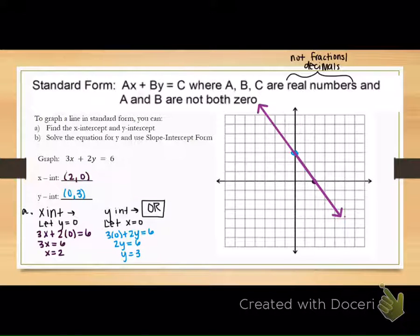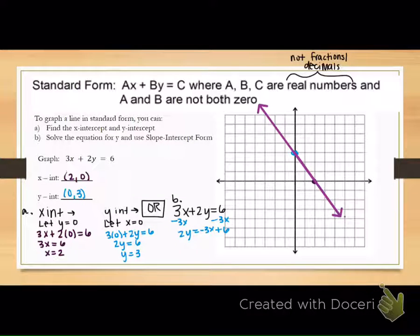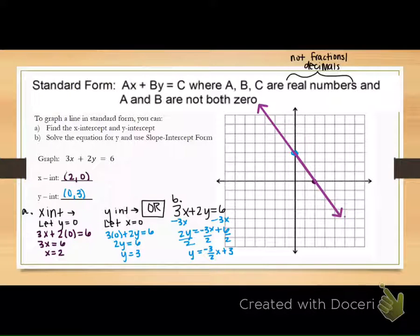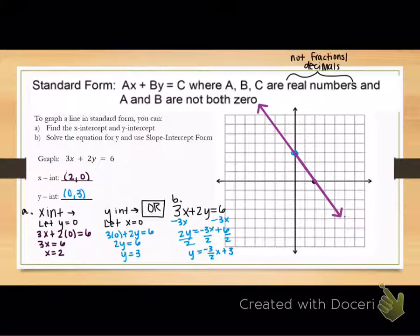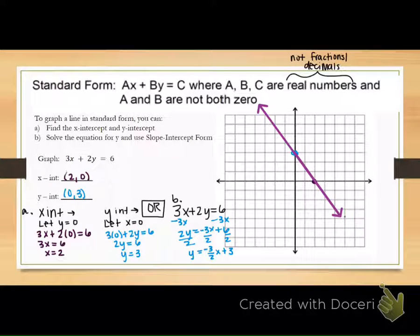Or what you could have done is just put it into slope-intercept form. You don't have to do both ways — I'm just showing you both on the first one. To put this into slope-intercept form, you would first subtract 3x from both sides, then divide everything by 2. So you'd start at 3 and go down 3, right 2 — it's still the same line. On the homework tonight, use the intercepts since that's what you're practicing, but on the test next week, if it makes more sense to put it into slope-intercept form, that's completely fine.